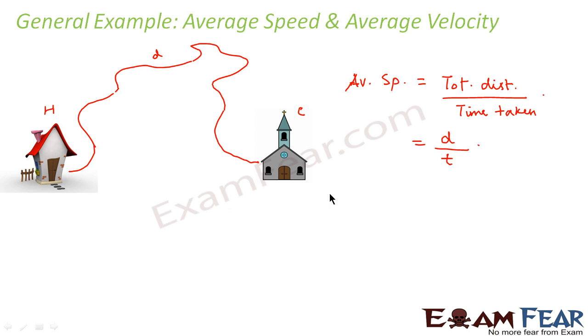Now if I ask you what will be the average velocity in this case? Average velocity would be total displacement divided by time taken. So total displacement in this case would be the shortest distance between the initial and the final position. What is the initial position here? Home. And what is the final position? The church. So the shortest distance between home and church would be a straight line joining them.